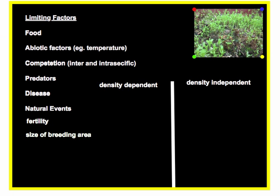Moving to the blackboard, key limiting factors include: food; abiotic factors such as temperature and, for plant populations, light and water availability from soil; competition from members of the same species (intraspecific) and other species (interspecific); predators; disease; natural events like hurricanes and earthquakes; fertility; and the size of the area available for breeding.